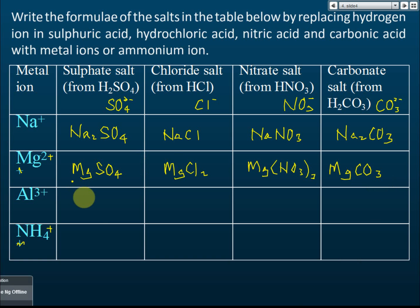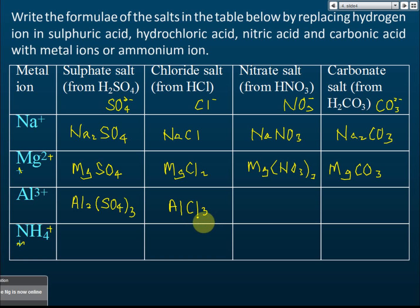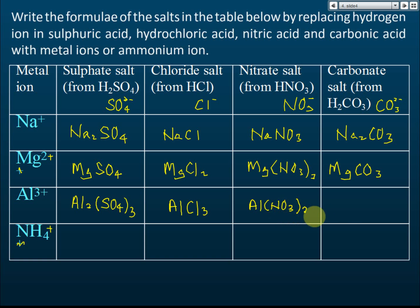For aluminium: aluminium sulfate is Al₂(SO₄)₃. Aluminium chloride is AlCl₃. Aluminium nitrate is Al(NO₃)₃. And aluminium carbonate follows the same pattern.